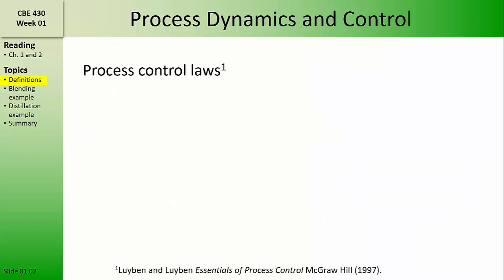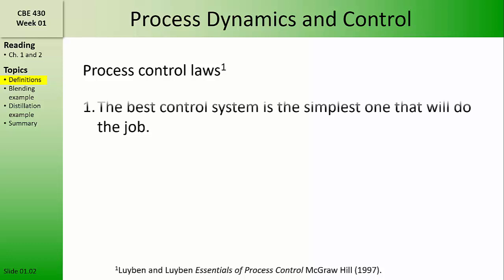Before we go much further, I want to introduce to you three process control laws which come from a different textbook than the one that we're using in this class. These are from Luyben and Luyben's Essentials of Process Control, and these are key concepts that we'll return to throughout the semester. The first is that the best process control system is the simplest one that will do the job. This is an application of Occam's Razor. We can design very complex control systems, but complex control systems may not be necessary to achieve the desired function, and they may, in fact,